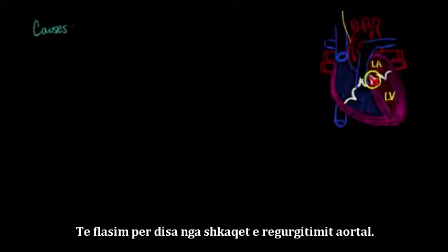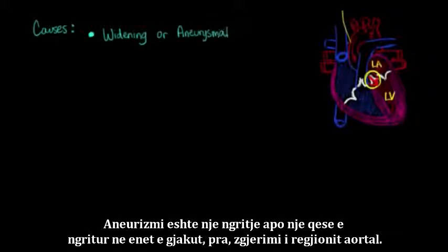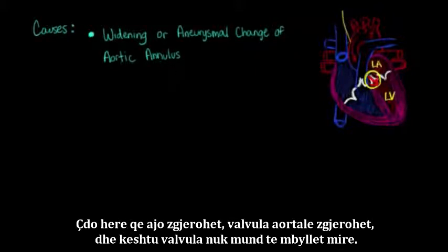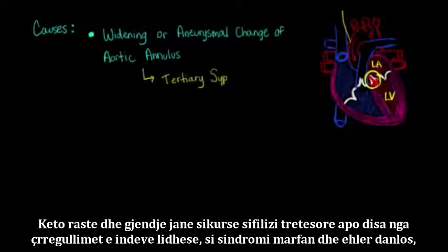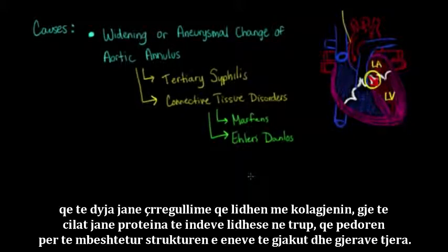Let's talk about some causes of aortic regurgitation. One way this occurs is when you get widening or aneurysmal change of the aortic annulus — the ring of fibrous tissue surrounding the aortic valve. Anytime that becomes widened, the valve area becomes widened and the valve can't close as well. This happens in conditions such as tertiary syphilis, or connective tissue disorders such as Marfan syndrome and Ehlers-Danlos, which are both disorders relating to collagen.